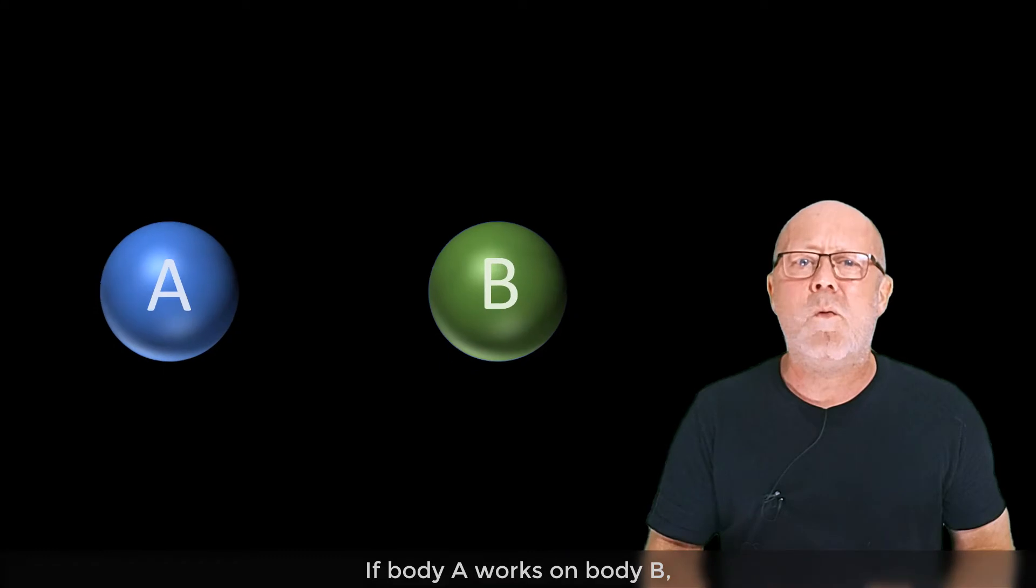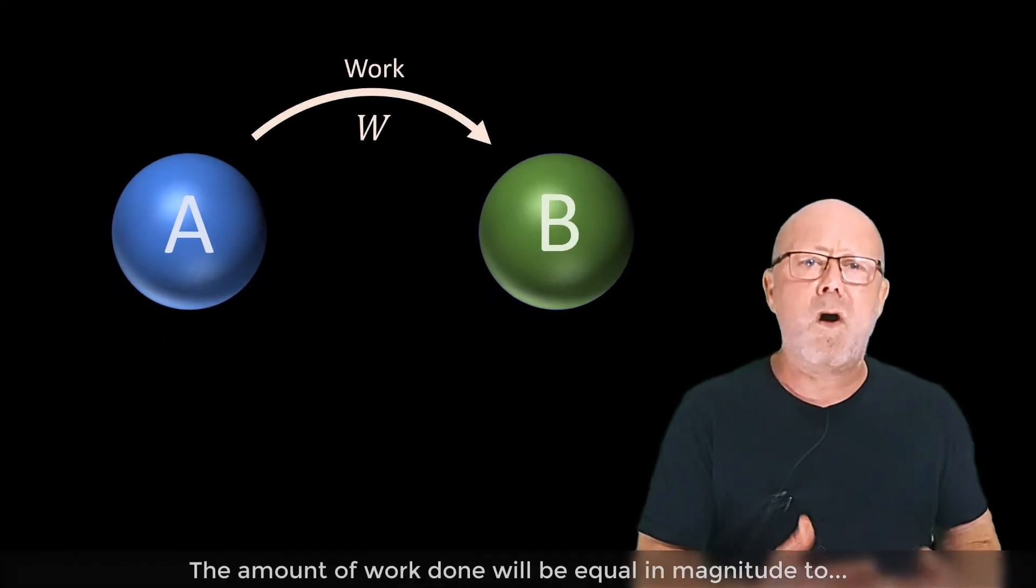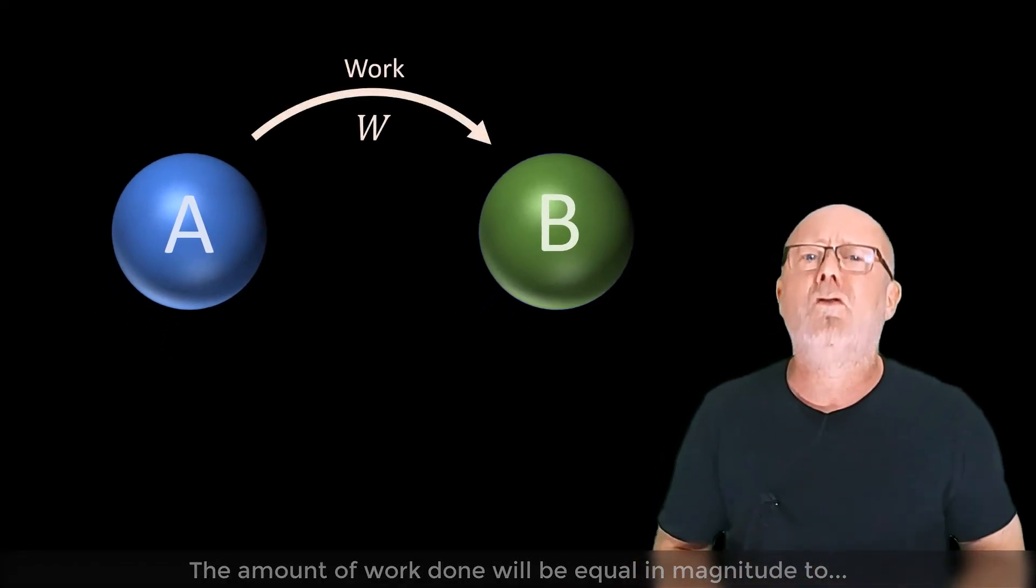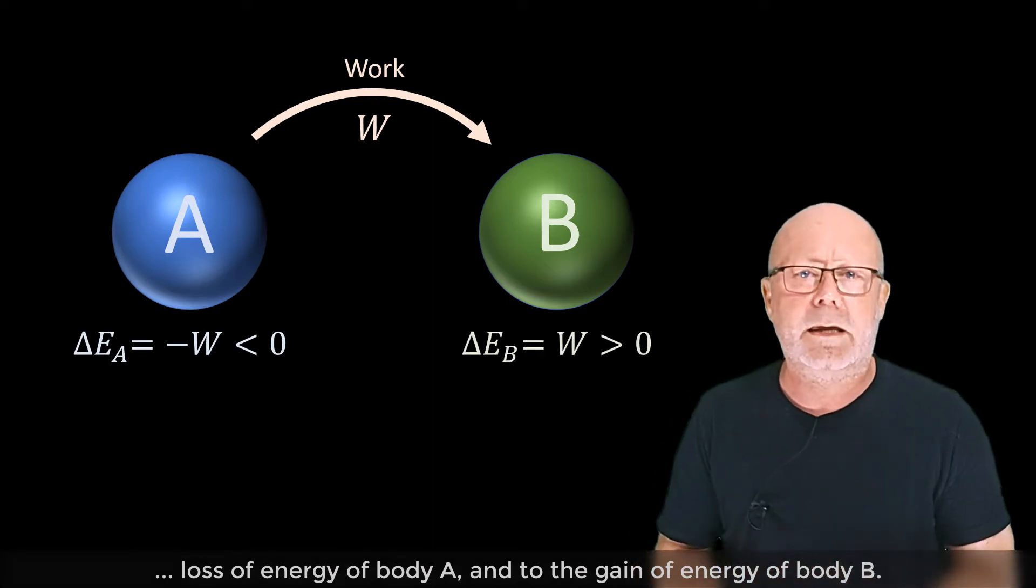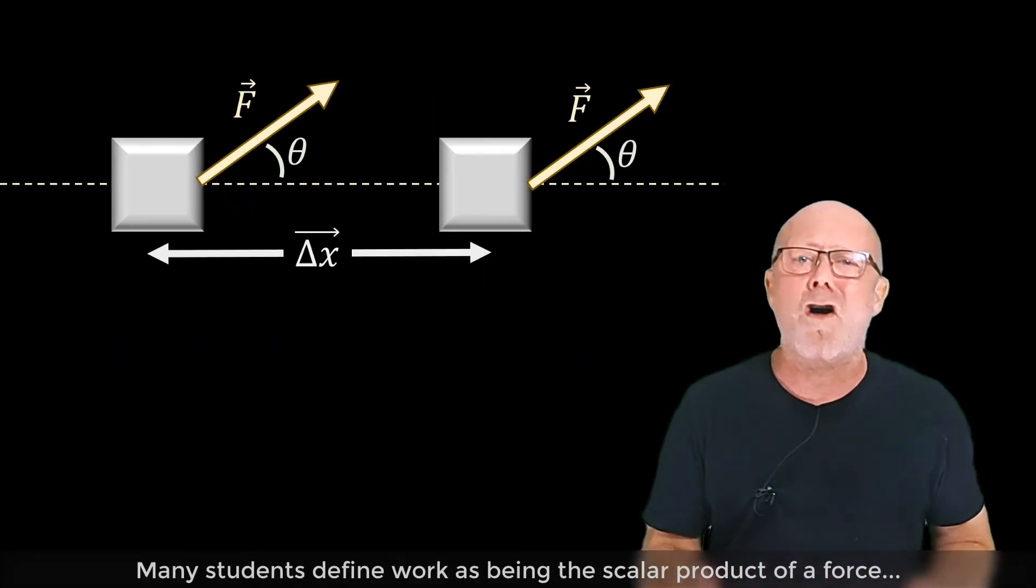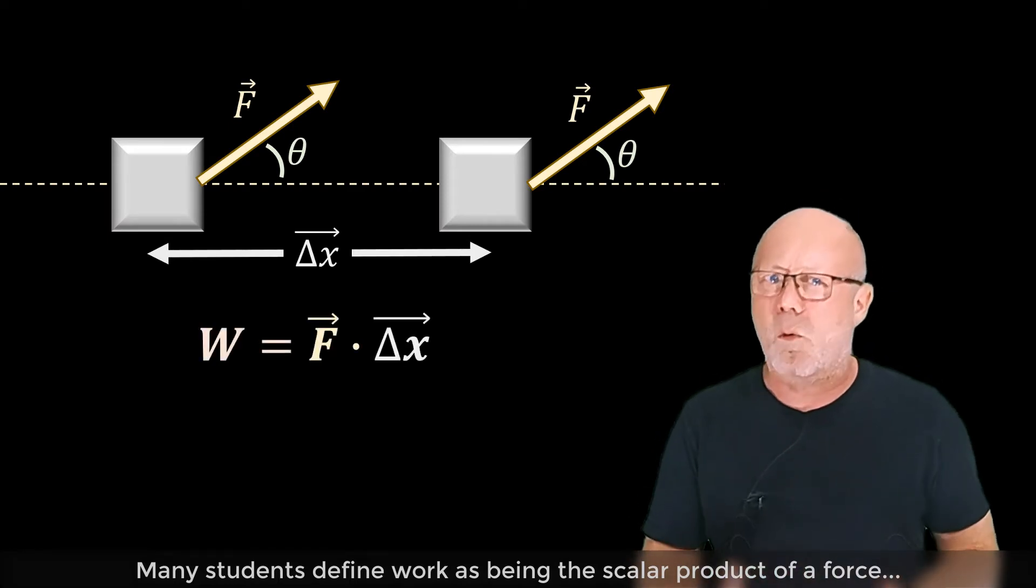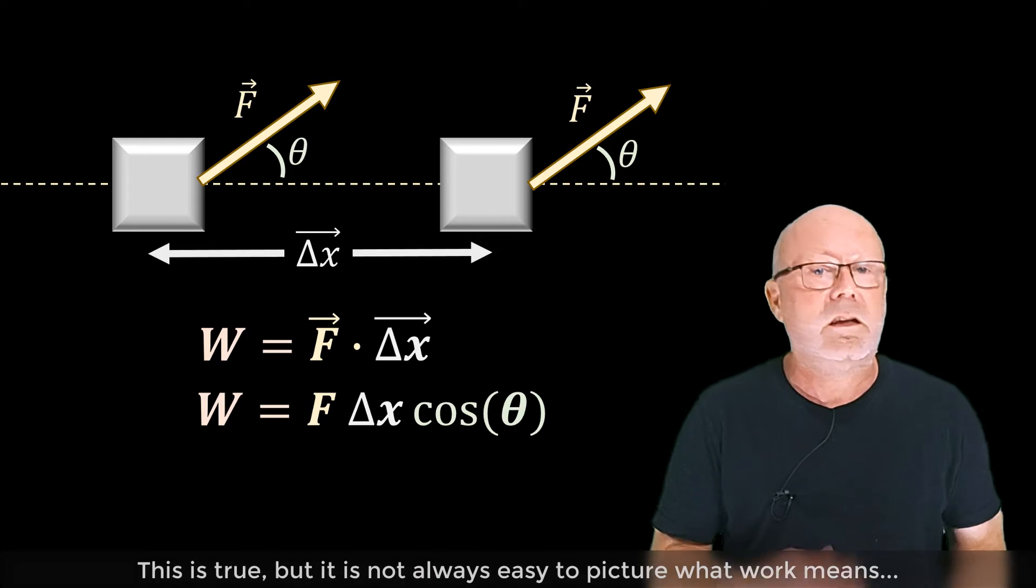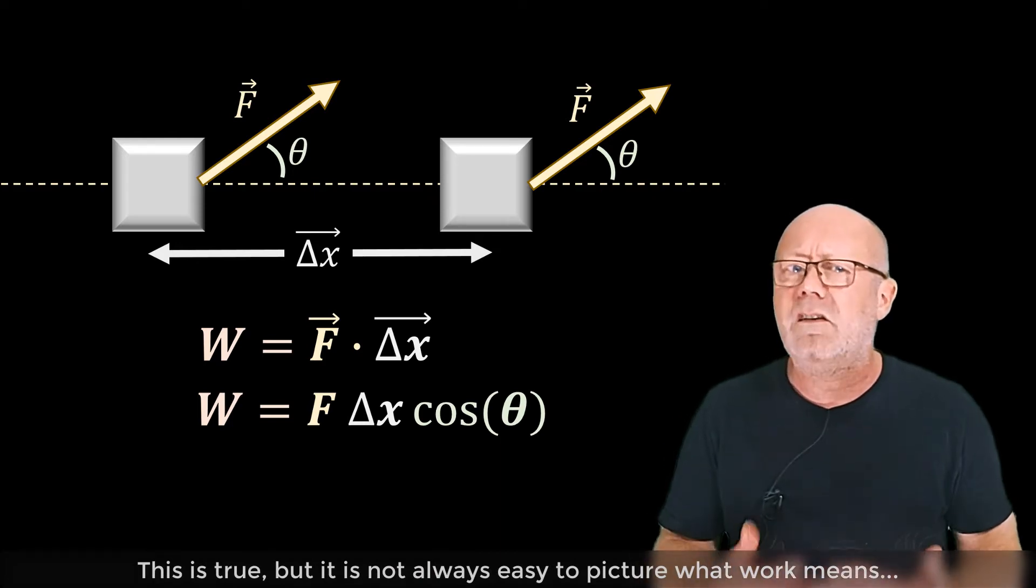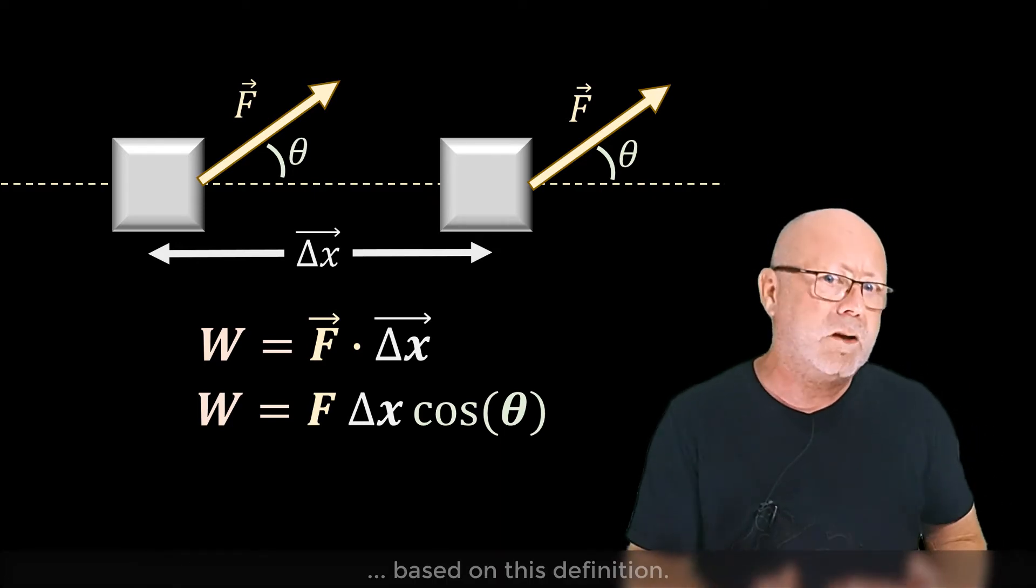If body A works on body B, the amount of work done will be equal in magnitude to the loss of energy of body A and to the gain of energy of body B. Many students define work as being the scalar product of a force with the displacement of the object on which the force is applied. This is true, but it is not always easy to picture what work means based on this definition.